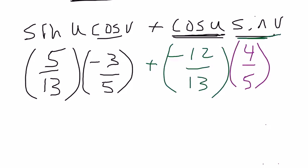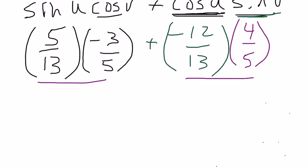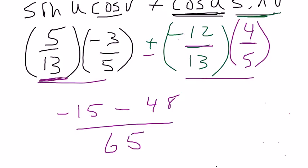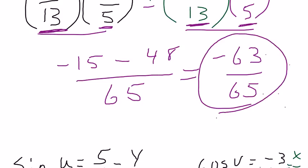Now I just have to simplify these two, multiply them and add them. 5 times negative 3 is negative 15, minus 12 times 4, 48. It's actually plus, but I know there's a minus sign there. And this is all over 65, because that's what 13 times 5 is. Same denominator. So now I just need to do the math on top. Negative 15 minus 48 is negative 63. So my exact answer for sine of u plus v is negative 63 sixty-fifths.